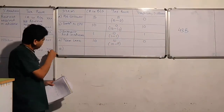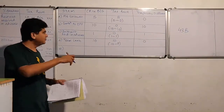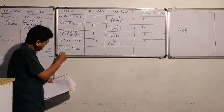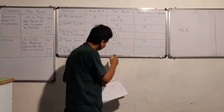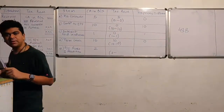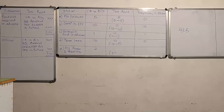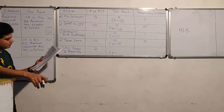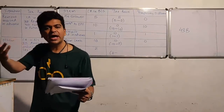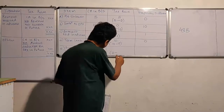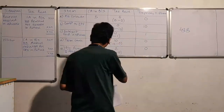Item E: current liabilities include outstanding fines and penalties of rupees two lakhs. Carrying amount in the balance sheet is two lakhs, and it falls in the other category. Since fines and penalties are disallowed for tax, the amount deductible for tax in future is zero. Therefore, the tax base is two lakhs and the temporary difference turns out to be zero.